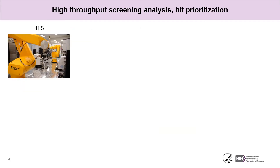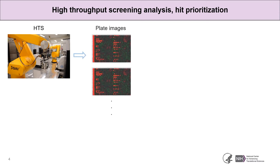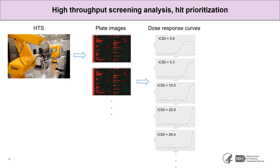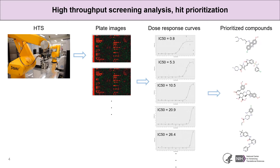Early-stage projects often begin with a high-throughput screen to find active chemistry against the chosen disease. HTS is automated, producing a flow of data in the form of plate image heat maps showing where compounds are active and at what concentrations. A chemoinformatician analyzes the plates, constructs dose-response curves, and prioritizes compounds from most potent to least. These are then presented to the team to decide which compounds to further study.